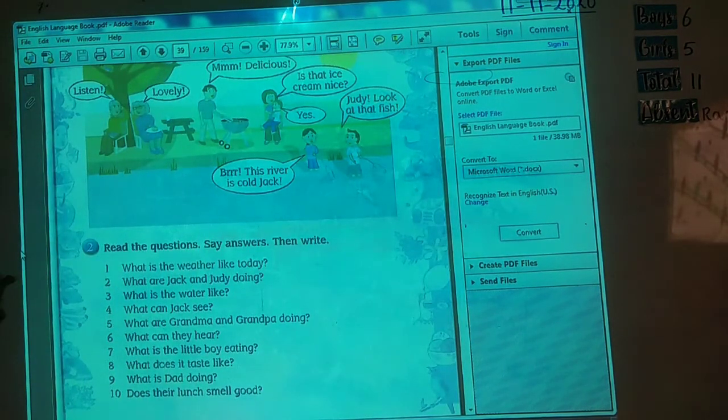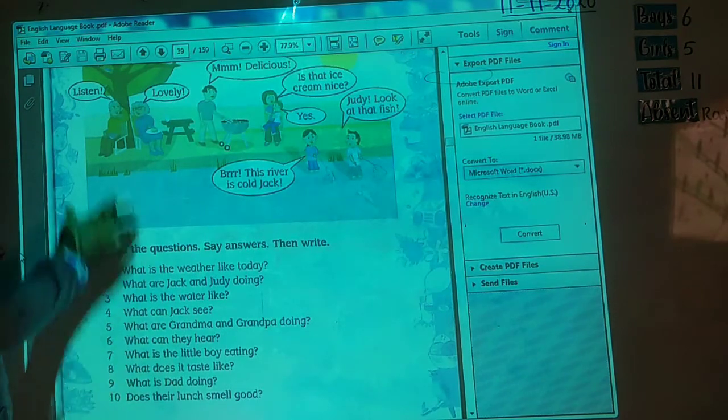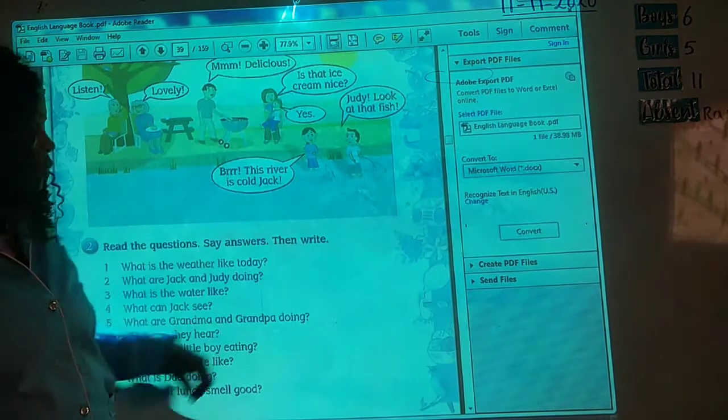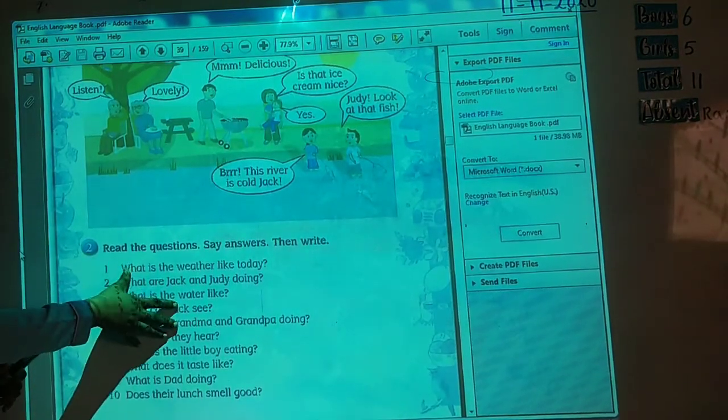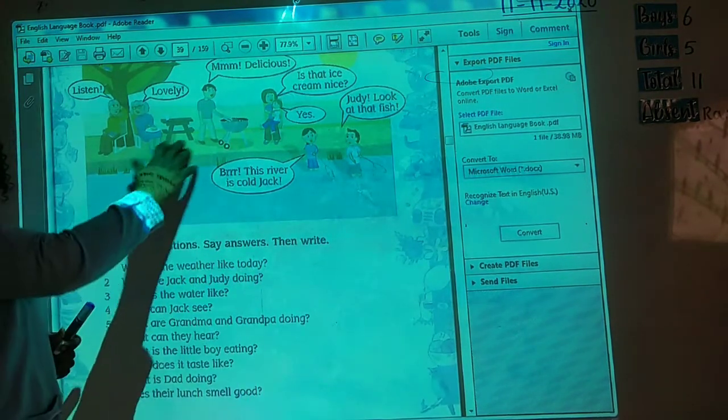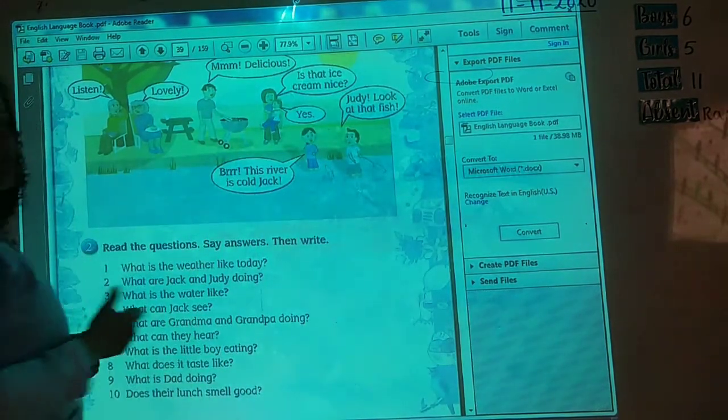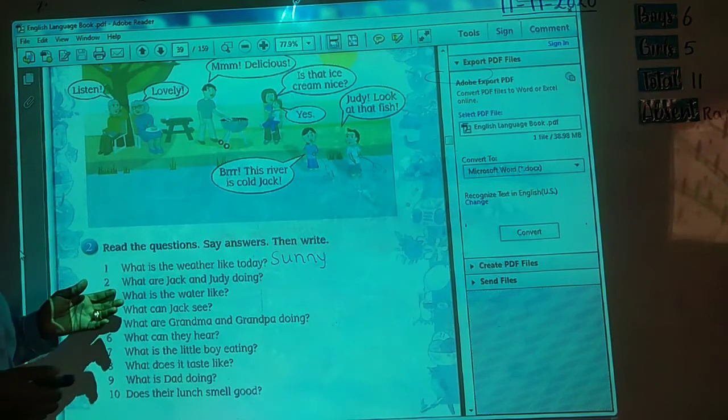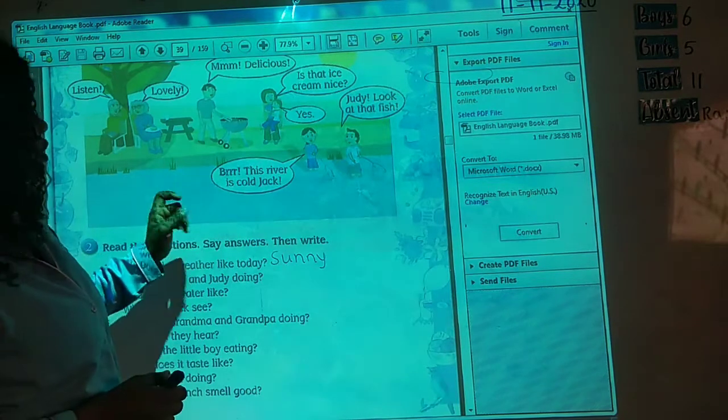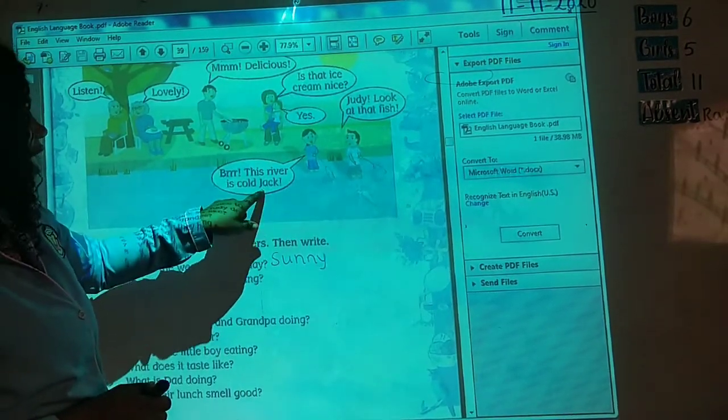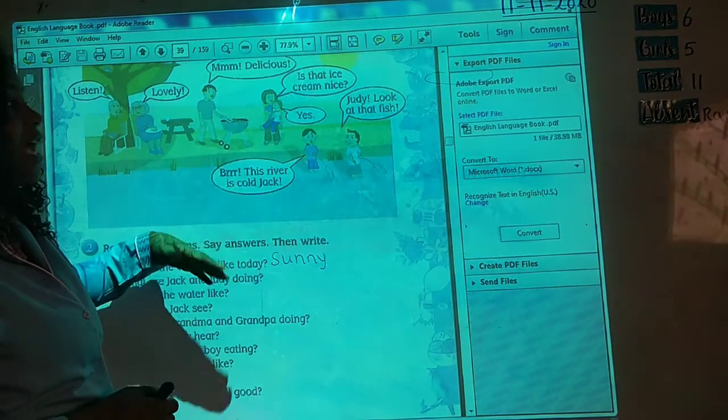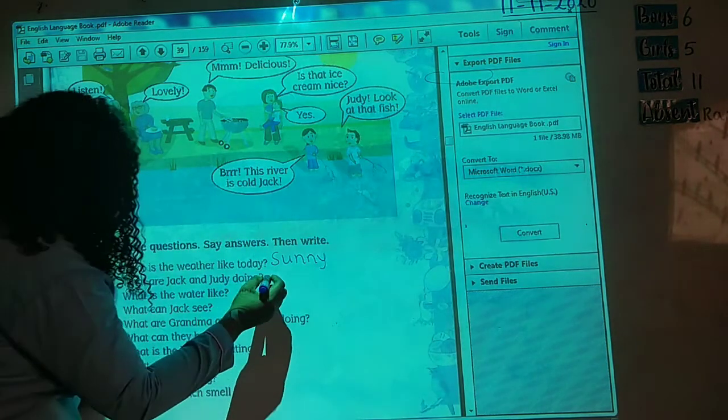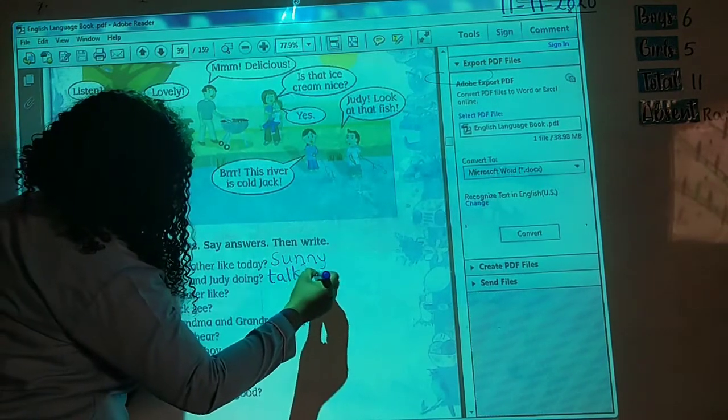We are going to look at this very page on our language book page 43. This is all we are going to write about. We are going to use this to build up our essay, but we are going to do the writing in our notebook. Here, let's do this one. What is the weather like today? You are going to look at the weather and what it is like. You will see the sun here. So you know that the weather is sunny. Then look at number two. What are Jack and Judy doing? Look at the picture here. This is Jack and this is Judy. What are they doing? They are talking or they are fishing.